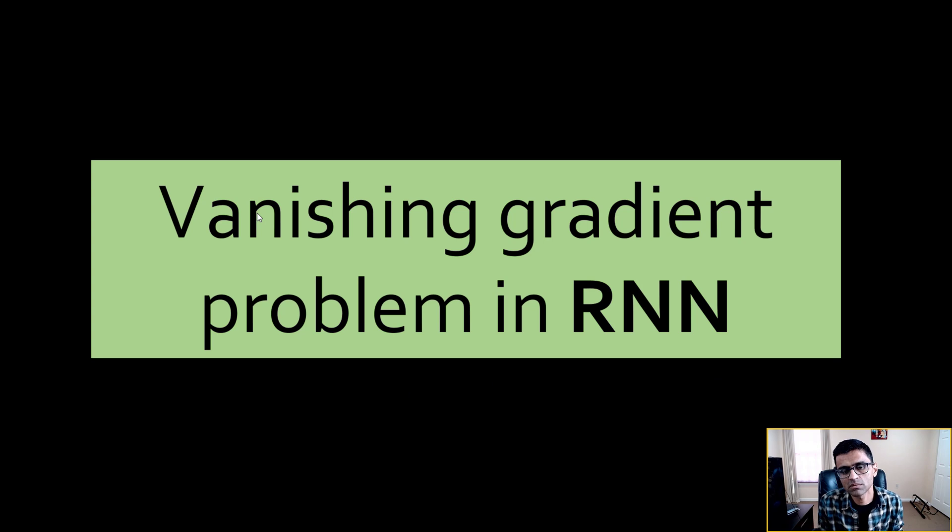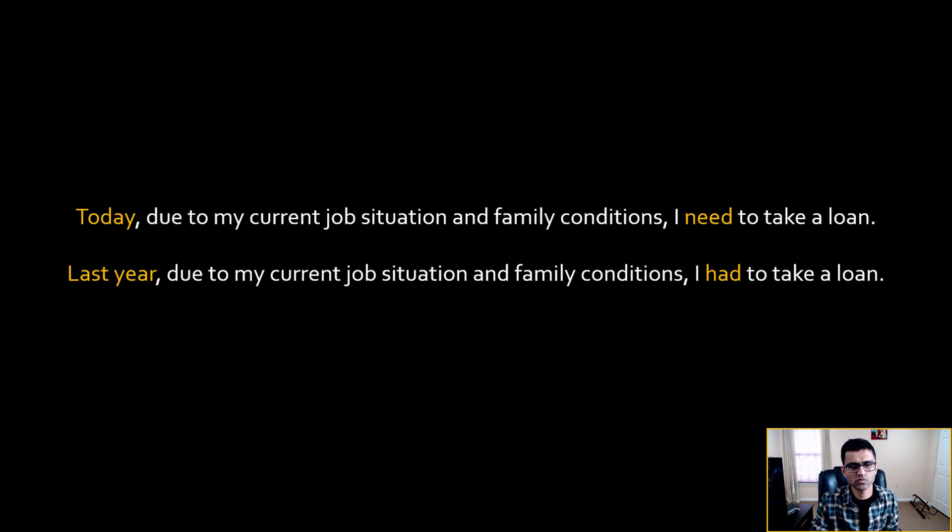Now let's talk about vanishing gradient problem in RNNs. There is exploding gradient problem also, but vanishing gradient problem is something that affects more. So let's say you have these two statements. Here I am doing an autocomplete NLP task. In Gmail when you type some line it tries to autocomplete. Let's say my statement is 'today due to my current job situation and family condition,' when I type condition comma, my Gmail tries to autocomplete 'I need to take a loan.' So these are the two statements. Now watch the words which are highlighted in yellow.